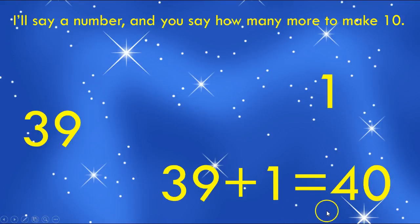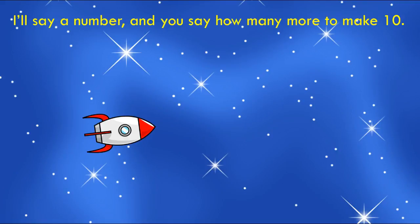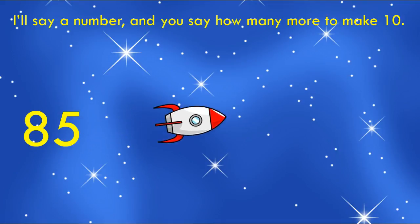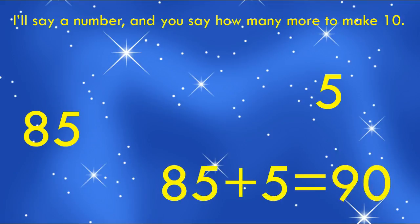The next 10 from 39 is 40, and you only need one more to get to 40. Here's our last one — 85. Be careful. Write down the next 10 and then write your number sentence. Push pause and then push play when you're done. Let's see what the rocket ship says — 5. Did you write down 5? And did you write 85 plus 5 equals 90 for your number sentence?